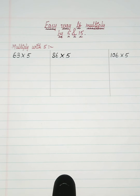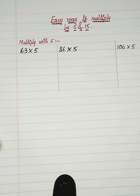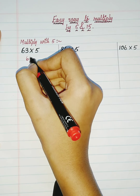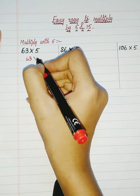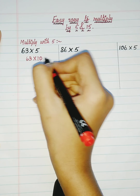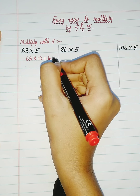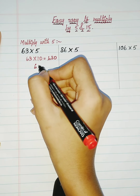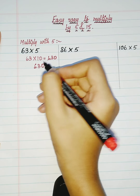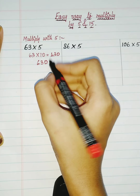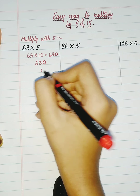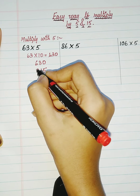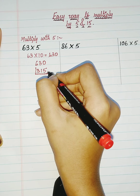Ignore the 5 and multiply with 10, so that you can easily get the result by adding 0 to it. 63 into 10 is equal to 630. Now with the result, make it into half — half of 630: half of 30 is equal to 15, and half of 6 is equal to 3. So the answer is 315. We got our answer in just 5 seconds.